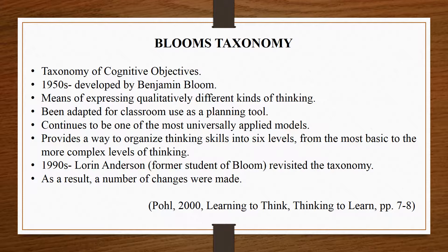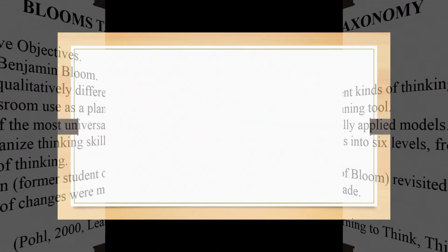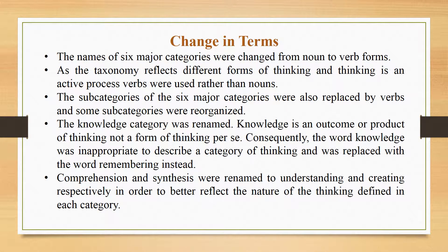In the 1990s, Lauren Anderson, a former student of Bloom, revisited the taxonomy. As a result, a number of changes were made. The names of the six major categories were changed from noun to verb forms. As the taxonomy reflects different forms of thinking, and thinking is an active process, verbs were used rather than nouns. The subcategories of the six major categories were also replaced by verbs and some subcategories were reorganized.